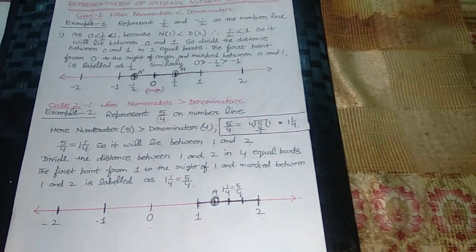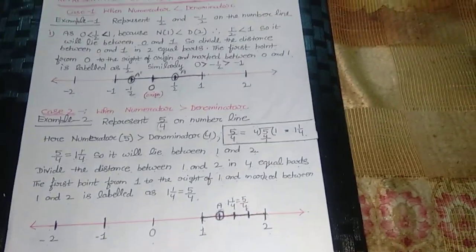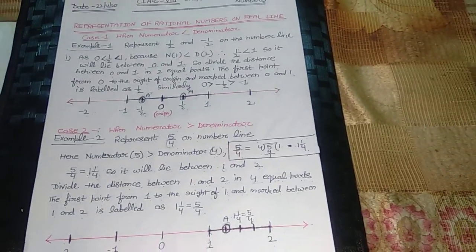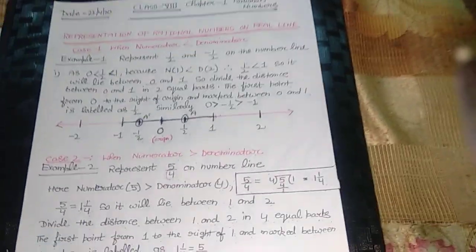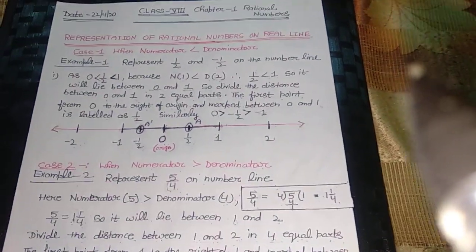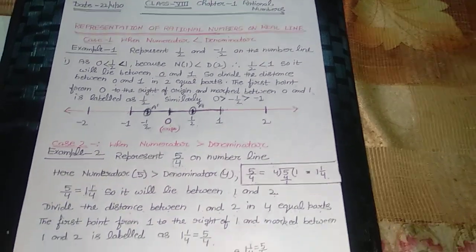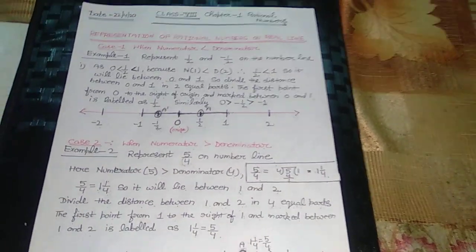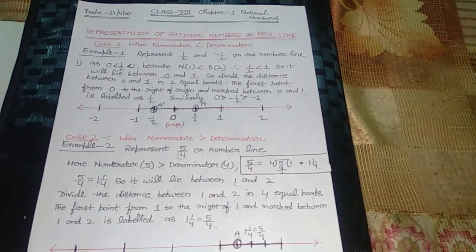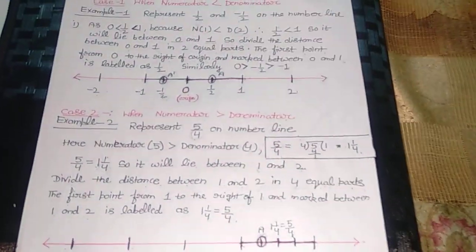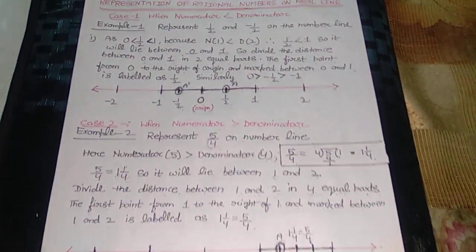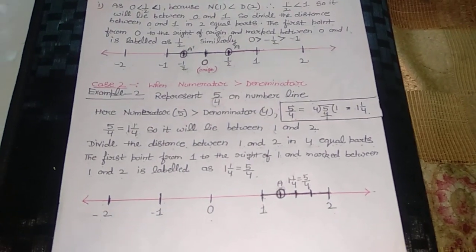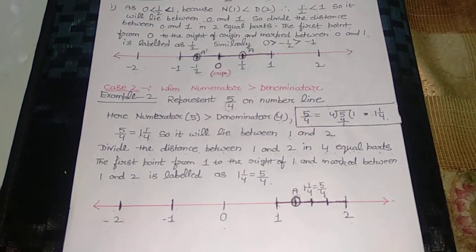In that way, you can represent any rational number on the number line. That is all for today. Thank you. After watching this video, try to attempt the questions of exercise 1B, which is attached here.